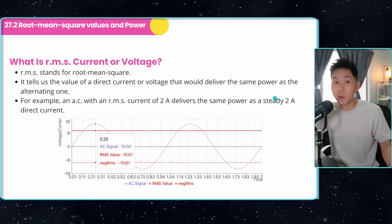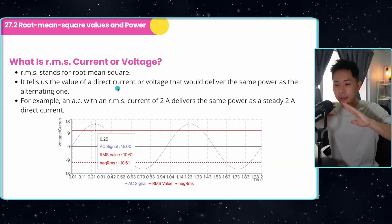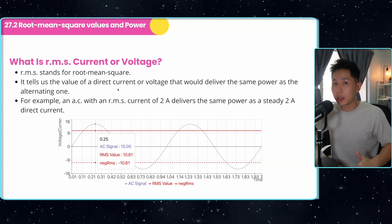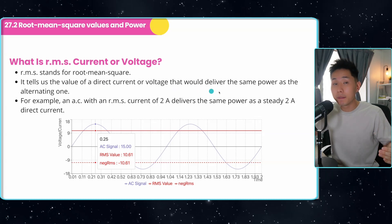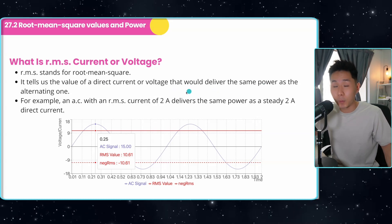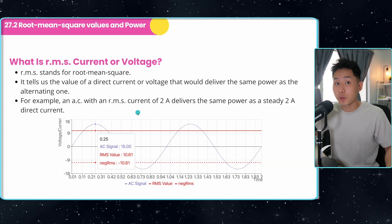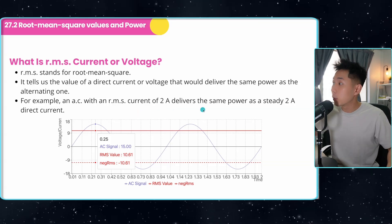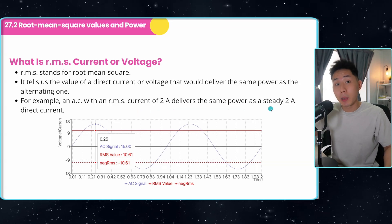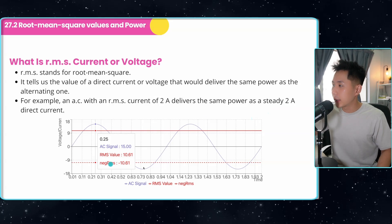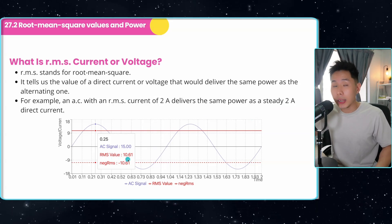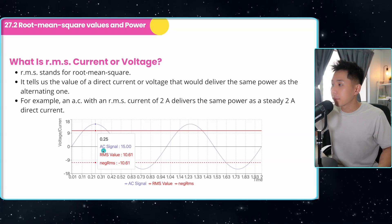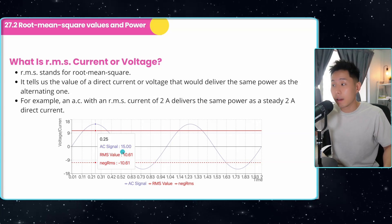This is why we need a value that can be plugged into the power equation. And that's when we have the root mean square current or voltage. This root mean square current or voltage tells us the value of a direct current or voltage that would deliver the same power as the alternating one. Let's say an AC with a root mean square current of two ampere would deliver the same power as a steady two ampere direct current. But the problem, as you can see in the graph, is how do we calculate the root mean square value based on the amplitude, which is the peak current or peak voltage.